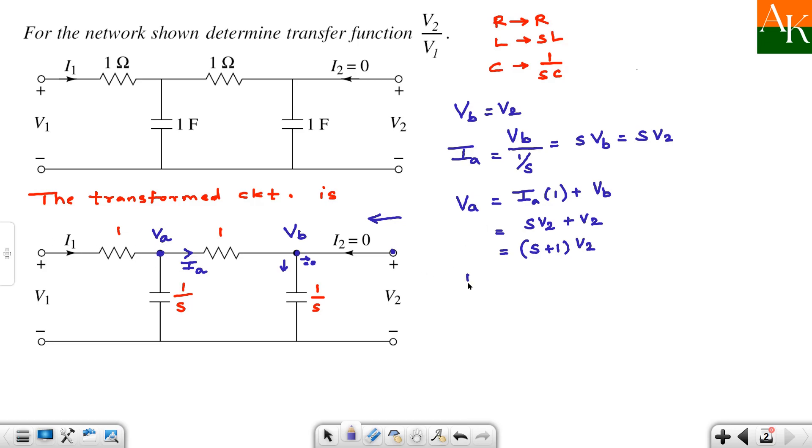Now, you have to write down about I1. I1 arrives at this junction and it will get split into two parts. One part which is moving downward can be written as Va divided by this impedance, that is nothing but 1 by S, plus the another part is this Ia. So, you can directly write down Ia over here. So, you have to substitute Va and Ia. But before that, this will become S times Va plus Ia. Va equation is S plus 1 times V2.